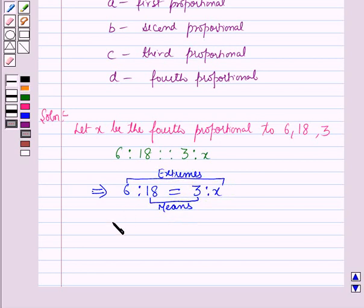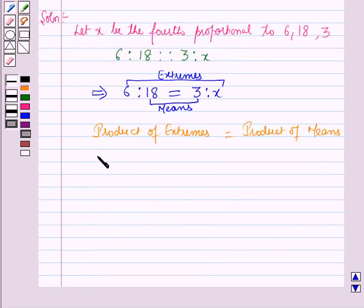We know that product of extremes equals product of means. This implies 6×x = 18×3.